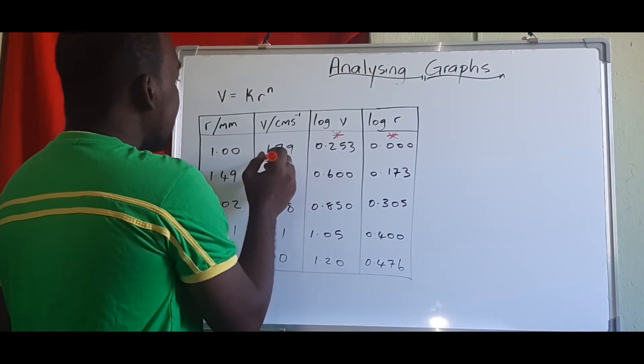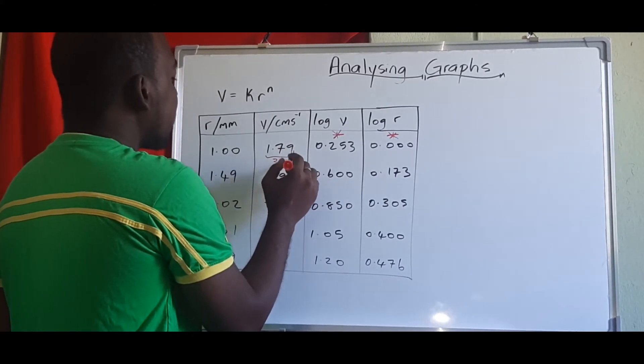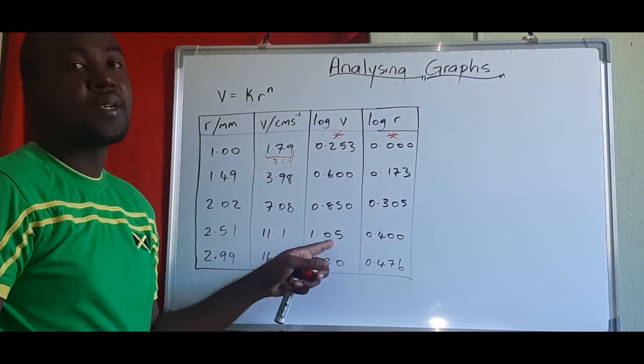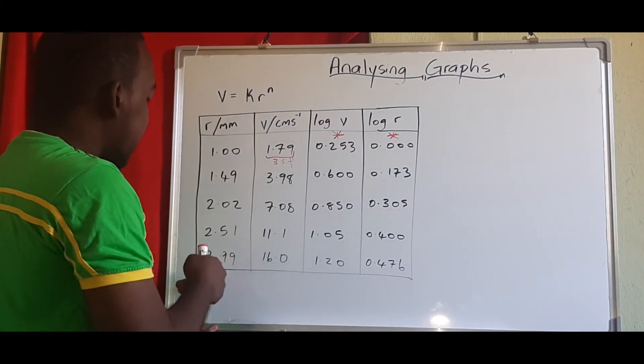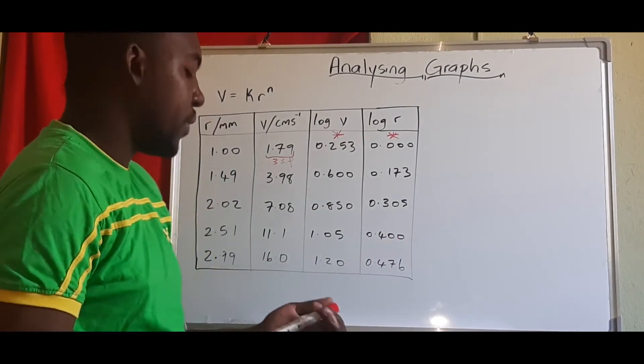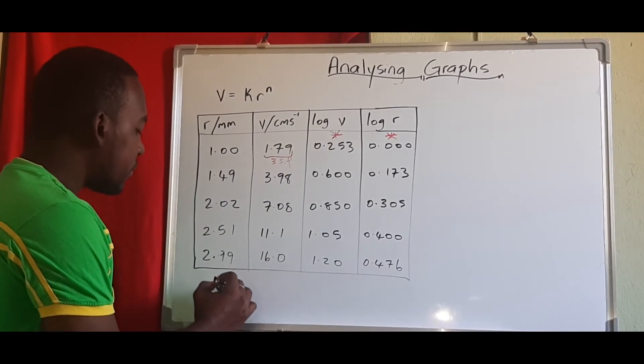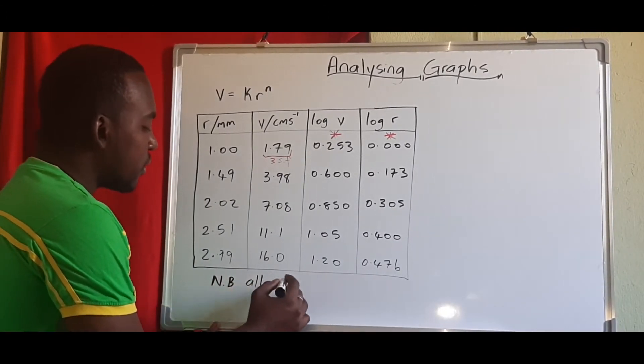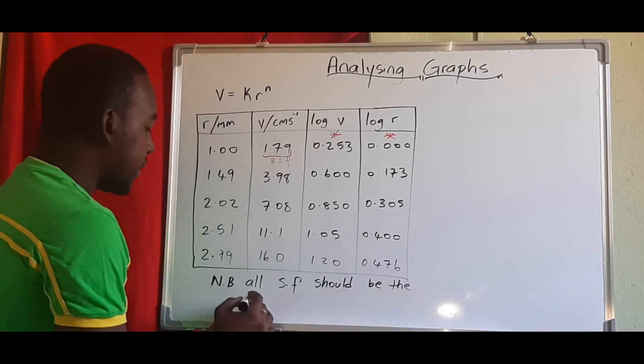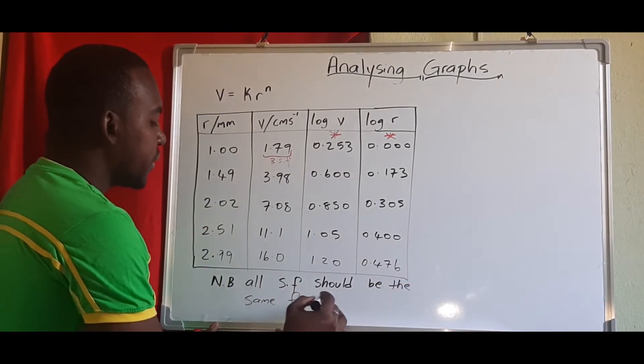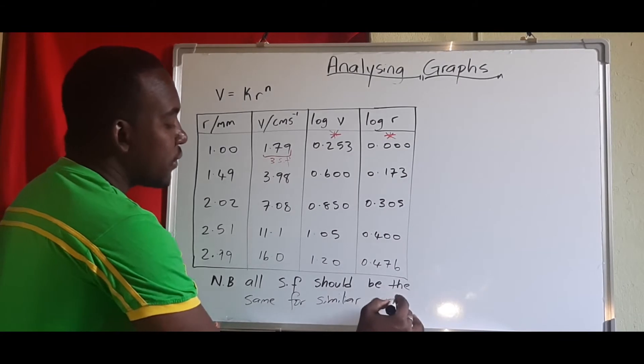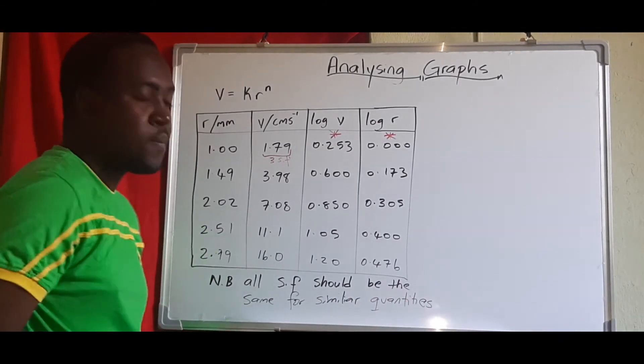So if we notice, for v, three significant figures. So that means when we find log v, all our values should be three significant figures. And same thing for r. r here is three significant figures. So the values that we get for log r should also be three significant figures. So that's something important. So all significant figures should be the same for similar quantities.